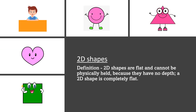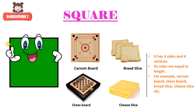So first, we're going to start with 2D shapes. 2D shapes are completely flat. They cannot be held because they don't have any depth. Let's start with our first shape. The first shape that we are going to learn is square. S-Q-U-A-R-E, square.